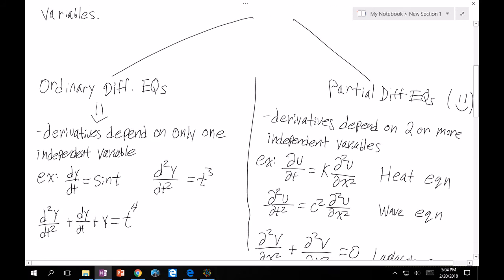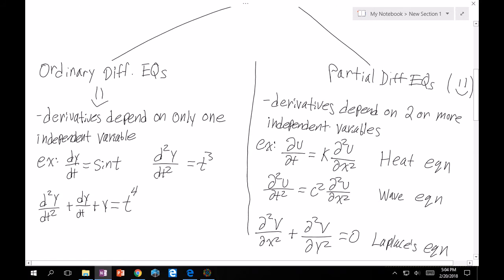We have ordinary differential equations and partial differential equations. Ordinary differential equations will be known as ODEs, and partial DiffyQs will be known as PDEs. Looking at the left-hand side here, an ordinary differential equation is an equation that has derivatives that depend on only one independent variable. An example of this would be dy/dt equals sine of t. You'll notice that we only have the derivative of y with respect to t, and that is equal to sine of t.